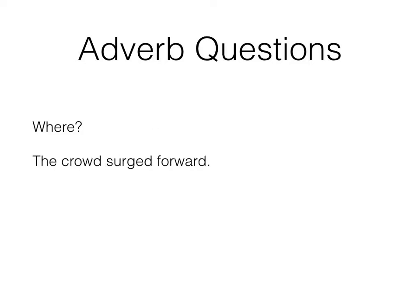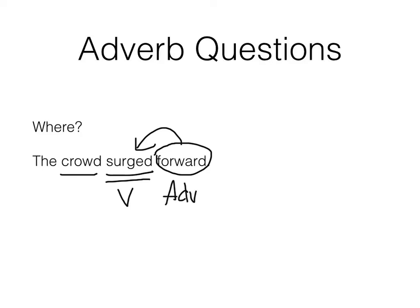Next, we have where. 'The crowd surged forward.' The crowd is our subject; surged is our verb. It tells where did they surge — what direction. They surged forward. Because forward is describing a verb, it is an adverb.